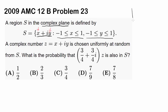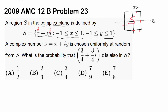So how can we graph this? In the complex plane — that's the real axis and that's the imaginary axis — our values vary between negative 1 and 1 for both x and y, including the endpoints. So we get a square with side length 2. This entire shaded region is region S.